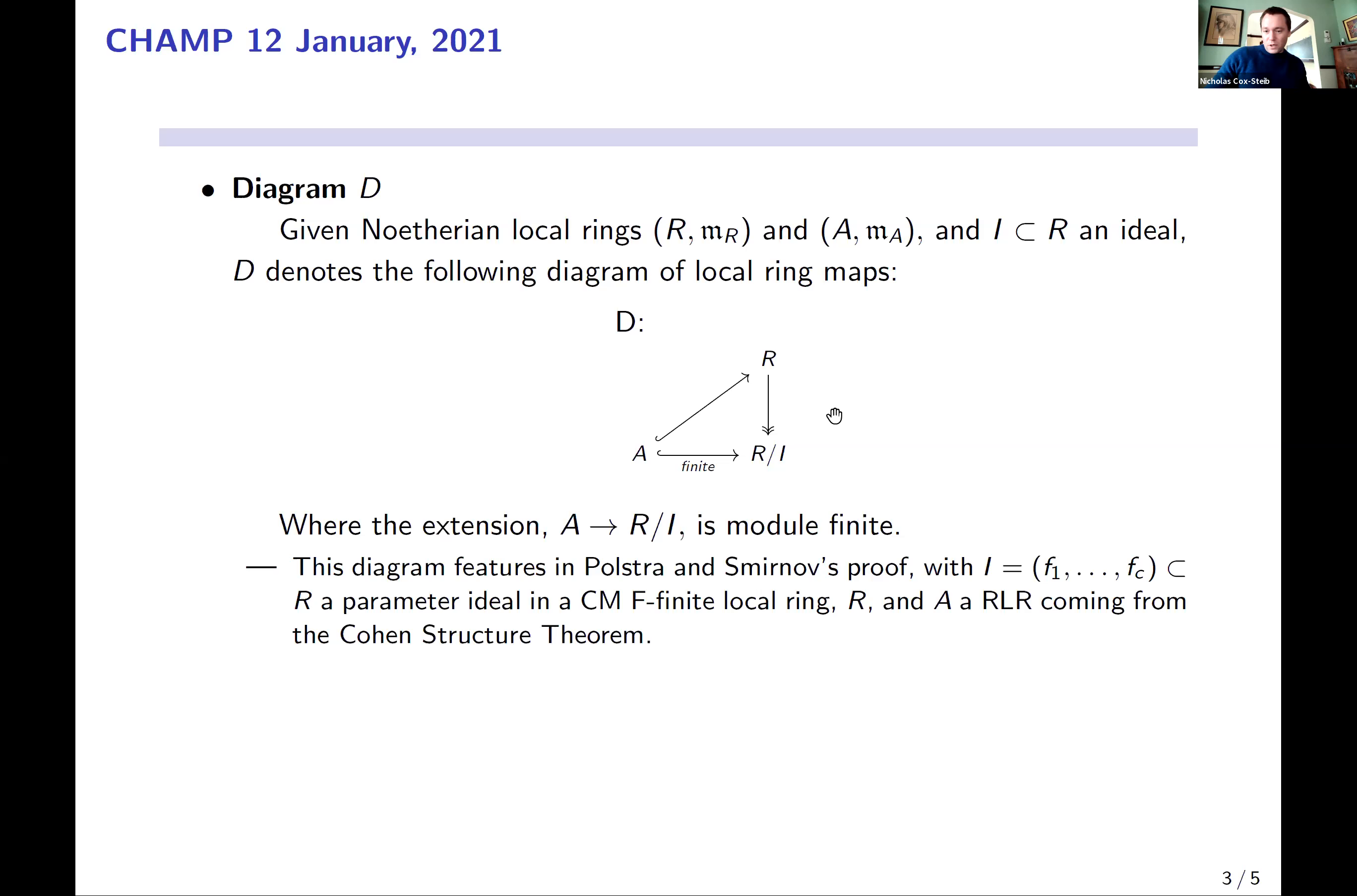So this comes about when R is complete. It can come about when R is complete by choosing a system of parameters on R mod I in a coefficient field. You get a finite extension from the Cohen structure theorem, and then you can lift, or at least this works in equal characteristic. It's a little bit more complicated in mixed characteristic.